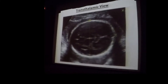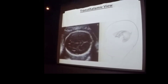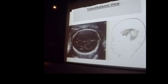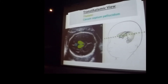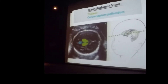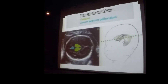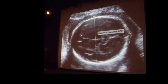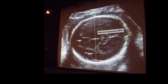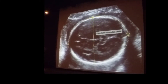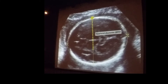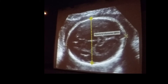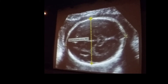Sonographic head measurements are obtained in the transthalamic view, which is an axial or transverse image of the fetal head. The thalami and cavum septum pellucidum are important landmarks in this view. The biparietal diameter is measured perpendicular to the sagittal suture, from the outer edge of the skull in the near field to the inner edge of the skull in the far field. The head circumference is measured by placing an ellipse around the outer edge of the skull.